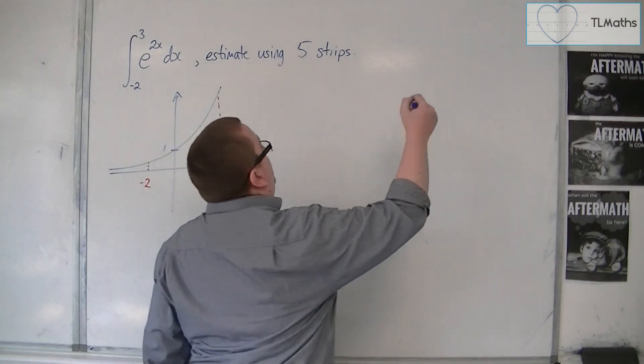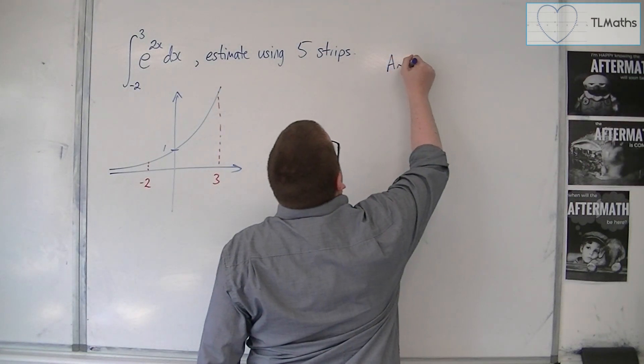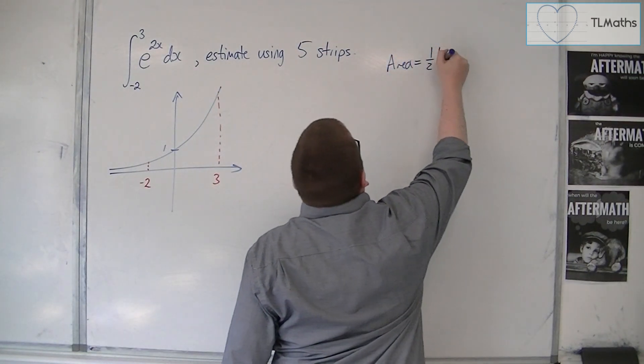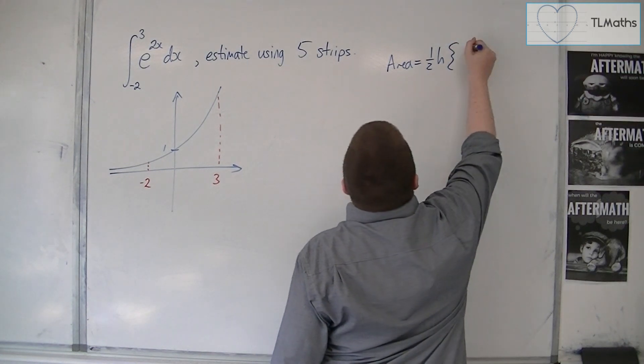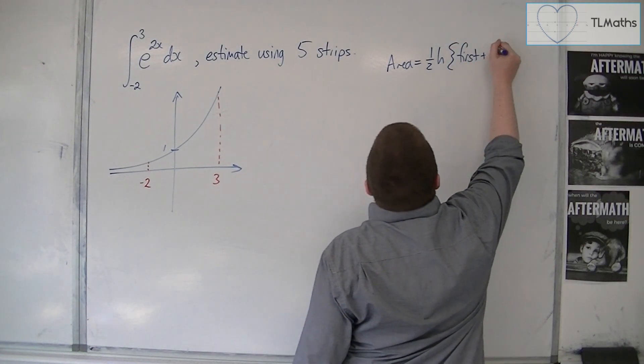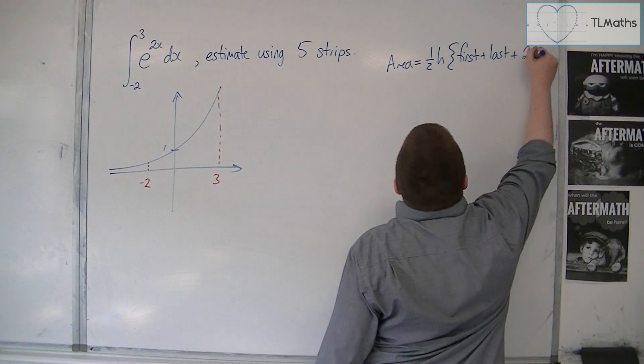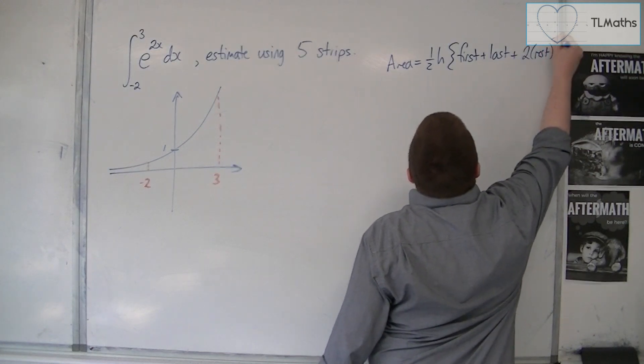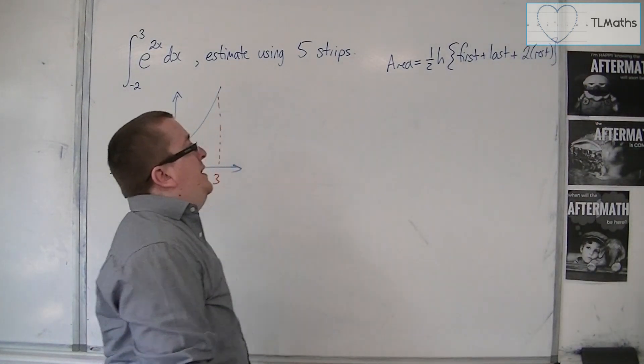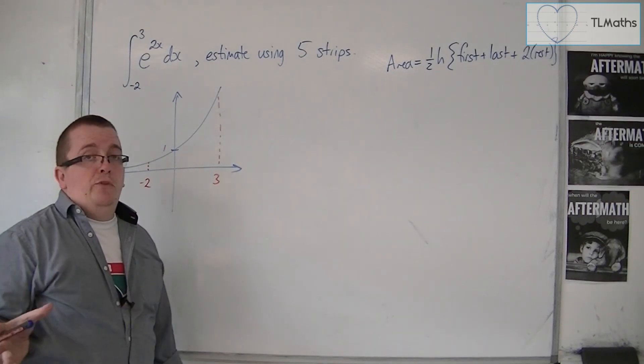The trapezium rule says that the area is 1 half times h times the first plus the last plus 2 times the rest. Now we need to work out what the first, last and 2 times the rest are.